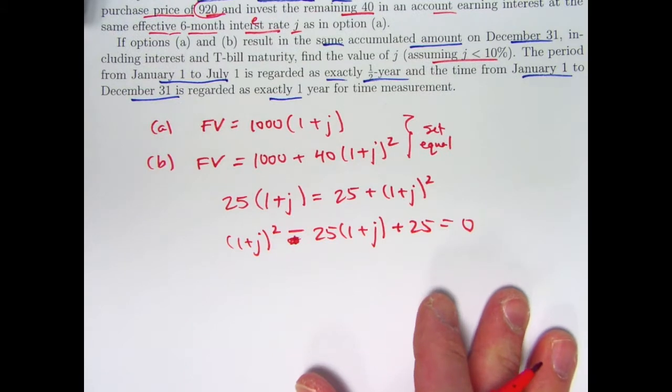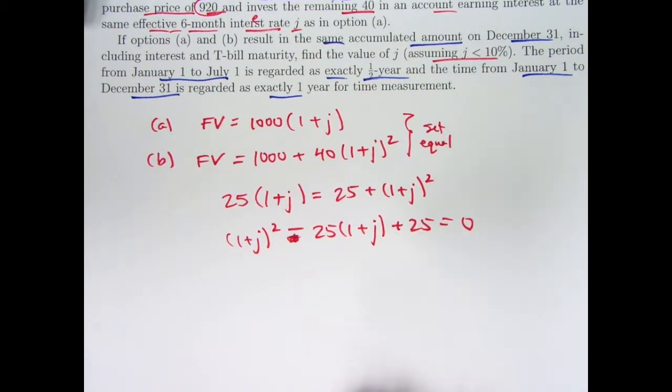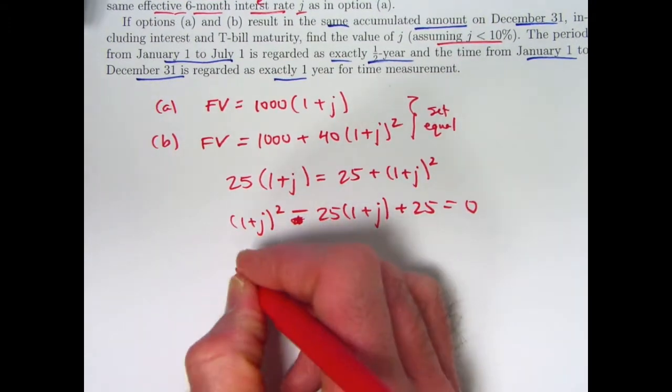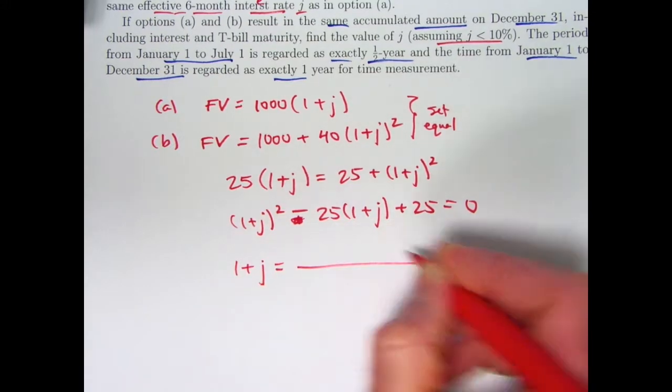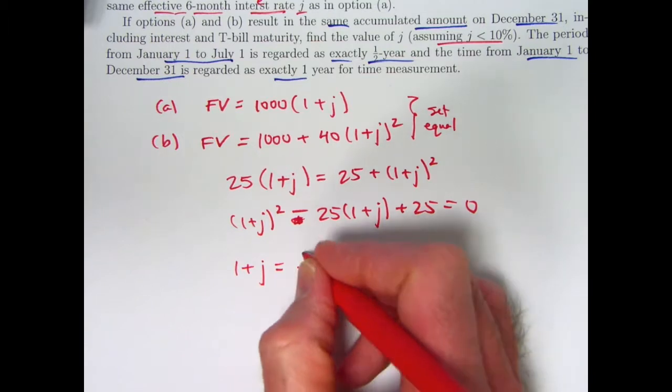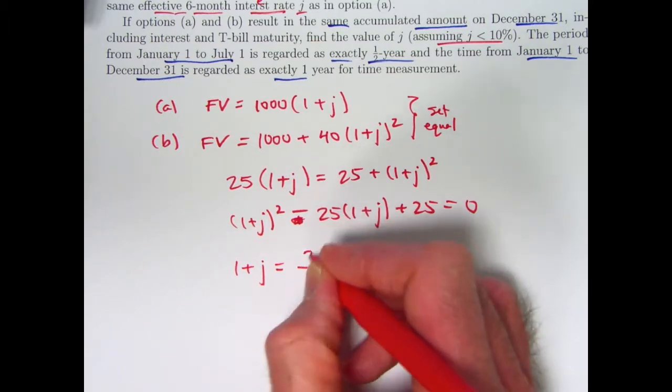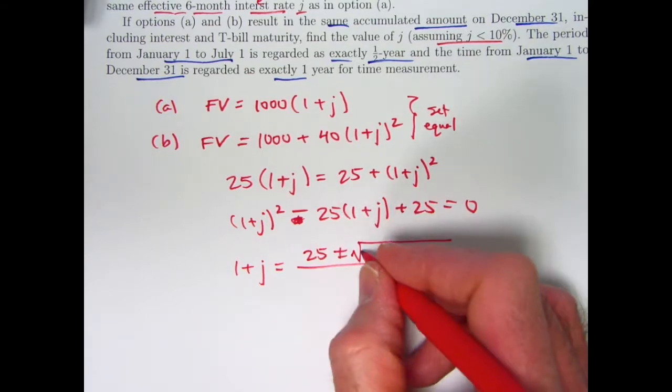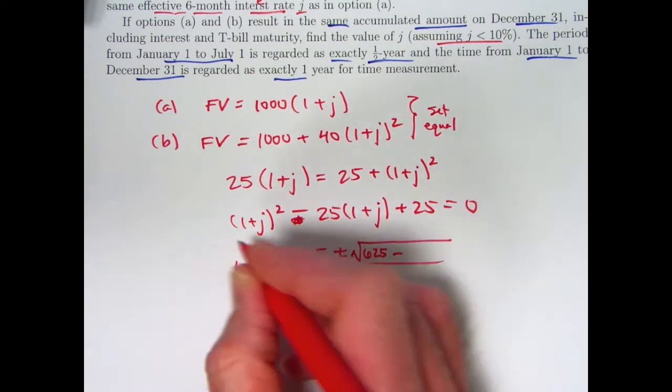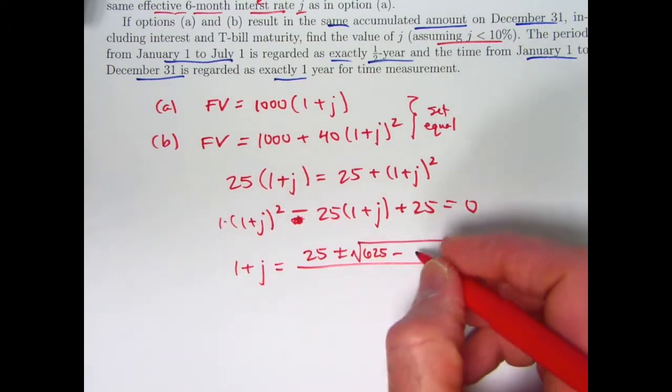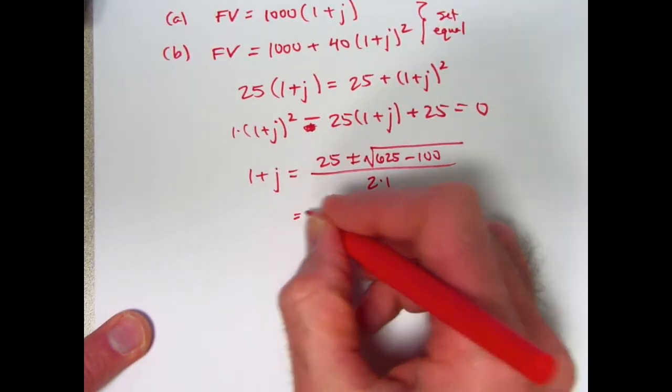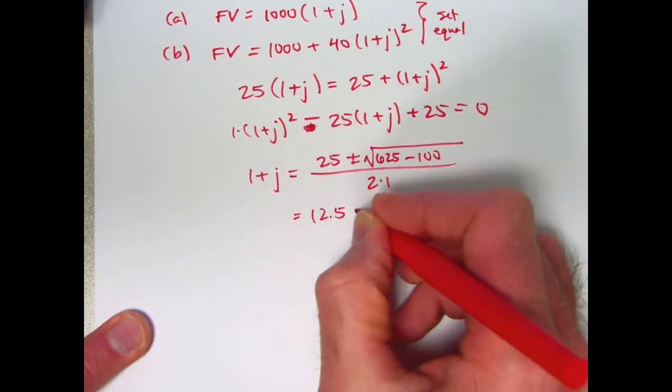This is a quadratic equation in 1 plus J that can be solved using the quadratic formula for 1 plus J. Once I get an answer I can subtract 1 from both sides to solve for J. Using the quadratic formula, 1 plus J will be: take the coefficient of the first power term and negate it. So negative 25 becomes positive 25 plus or minus the square root of negative 25 squared is 625 minus 4 times 1 times 25 is minus 100, all over 2 times 1.